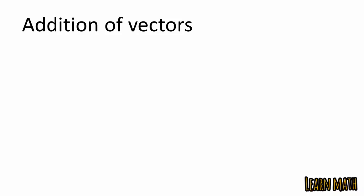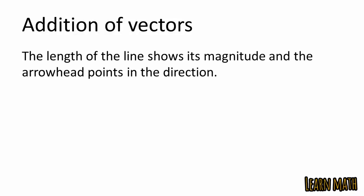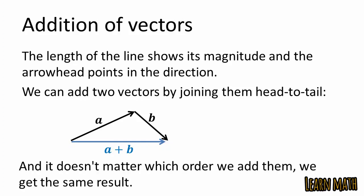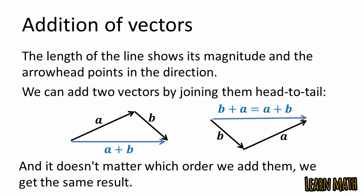Two vectors can be added using the head-to-tail rule. For example, this is vector A and this is vector B, and the blue line represents the resultant vector A plus B. It doesn't matter which order we add them — vector B plus A gives the same result as A plus B.